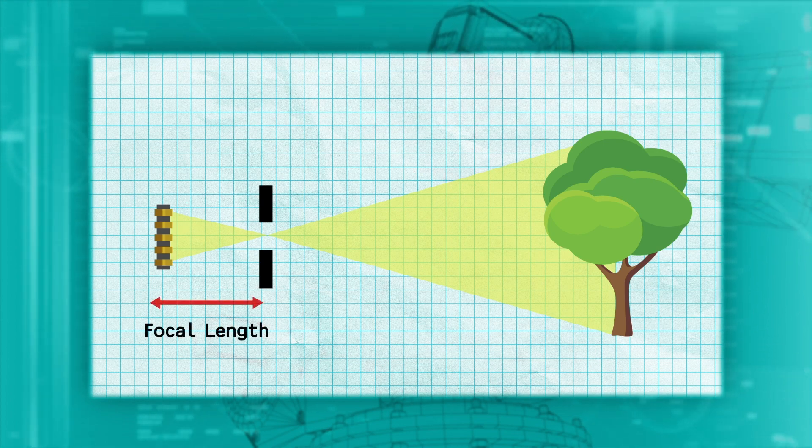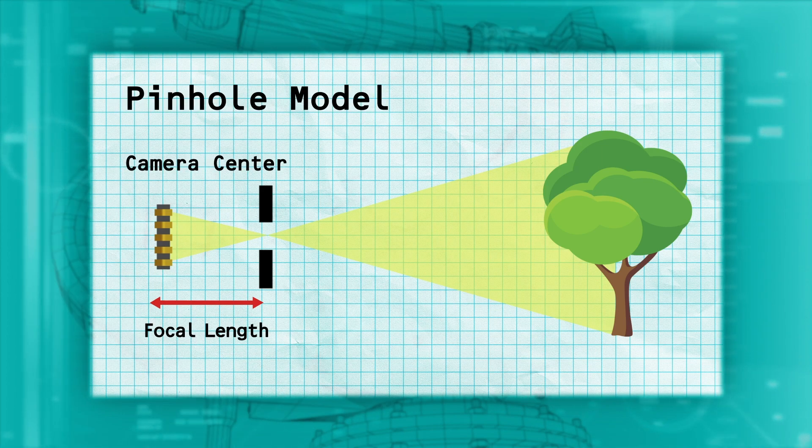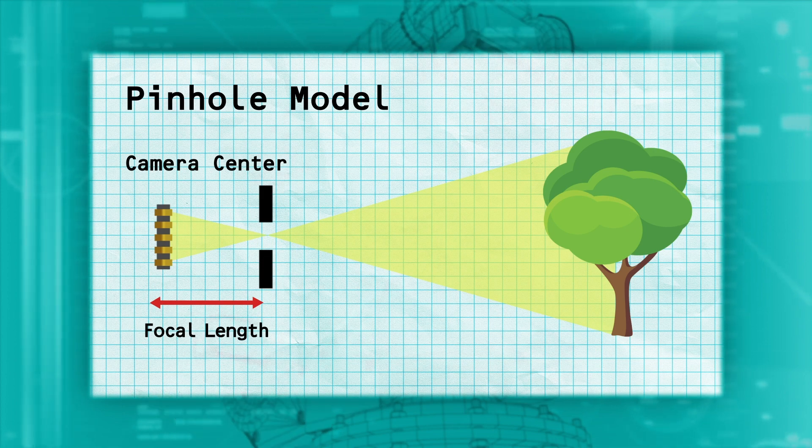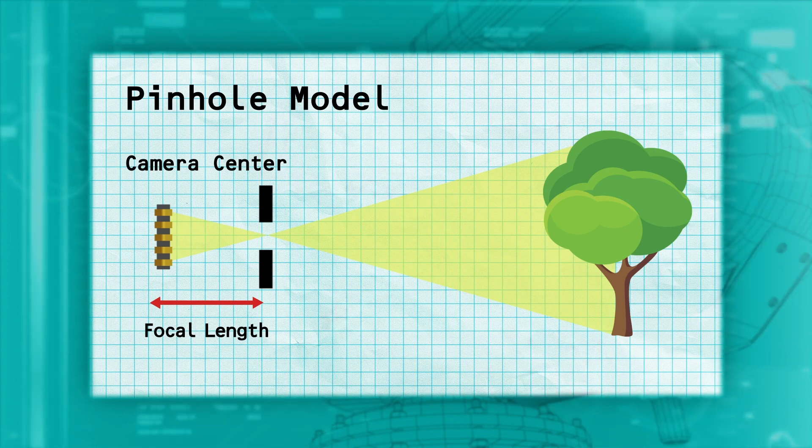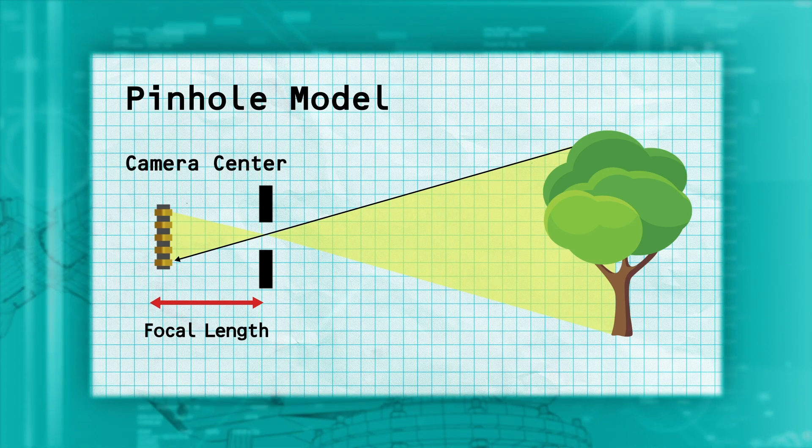We can also think of the pinhole as the camera center. This model of camera is called the pinhole model. We can also see why the tree is upside down on the sensor, since the pinhole takes a ray from the top part of the tree and focuses it on the lower part of the sensor, and vice versa.